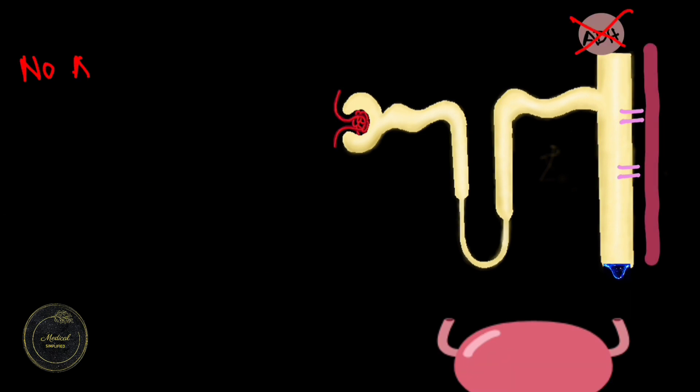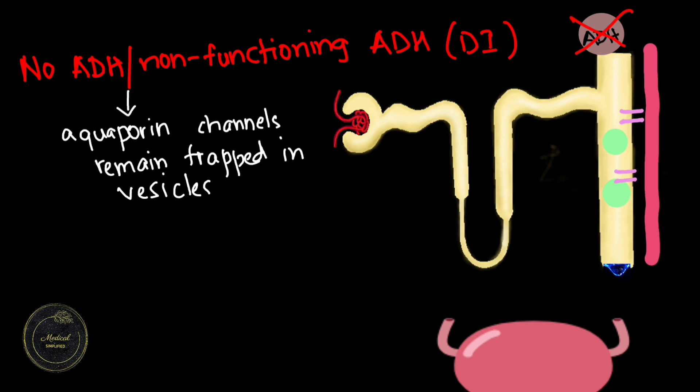Now let's see what happens if there is no ADH or ADH is present but it is not functioning. That is, it is a case of diabetes insipidus. Therefore, in diabetes insipidus, the aquaporin channels will remain trapped inside their vesicles. Because of this, there is lesser water reabsorption from the collecting tubule back into the blood vessels.